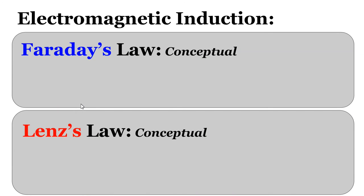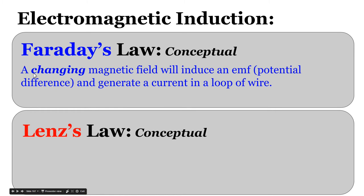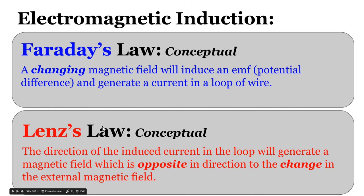As a summary: when there's a changing magnetic field strength inside a loop of wire, there's going to be an induced current — that's Faraday's Law. Faraday's Law says a changing magnetic field strength will induce an EMF, an electromotive force, which causes the current in that loop. When we think about the direction of that current, that's Lenz's Law. Lenz's Law tells us that the direction of the induced current will generate its own magnetic field, which is opposite in direction to the change in the external magnetic field.